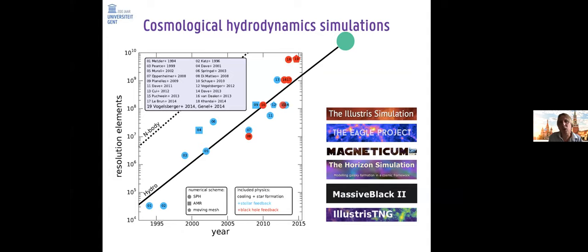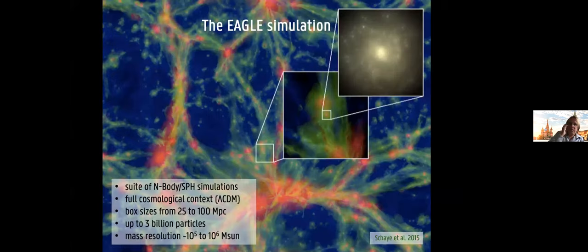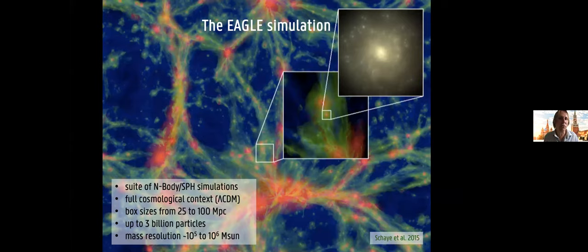Some of the most important large-scale cosmological simulations today are listed here. I'll talk mostly about the Eagle simulation, as that's the one our group has worked with most. Eagle is a suite of simulations with different volumes ranging from 25 to 100 megaparsecs cubed. The material — dark matter, baryonic matter (gas), and stars — is followed through cosmic time from the very early universe to today, following the laws of gravity and hydrodynamics using SPH methods.